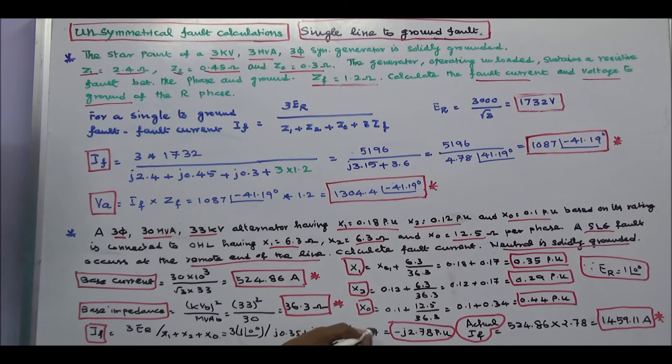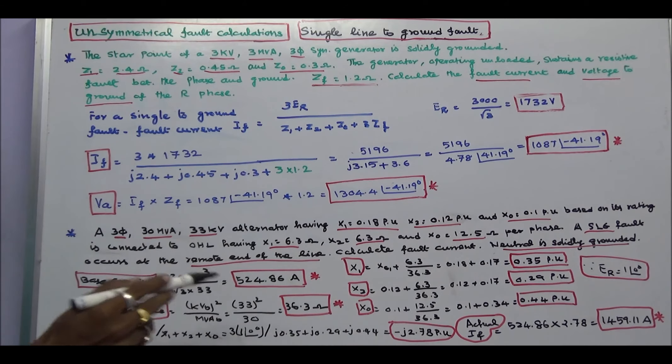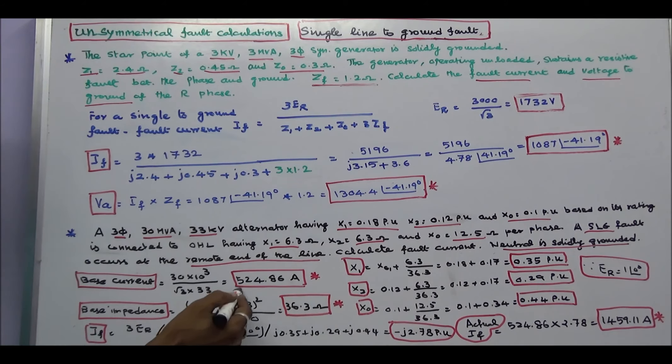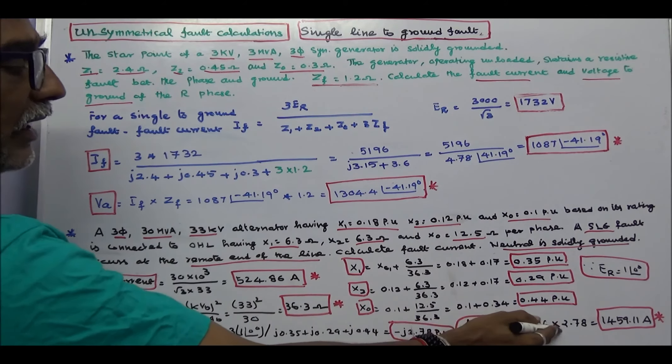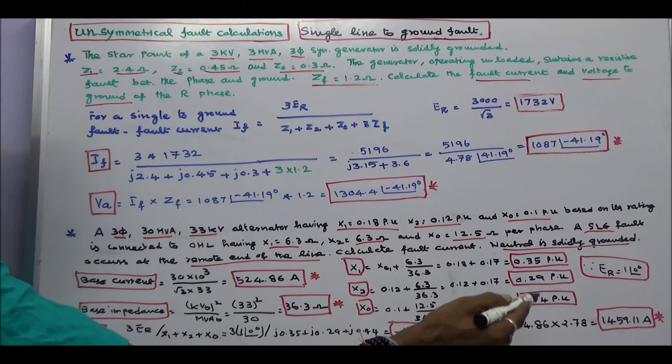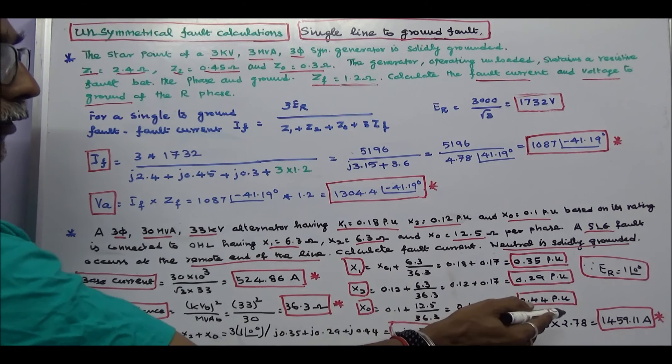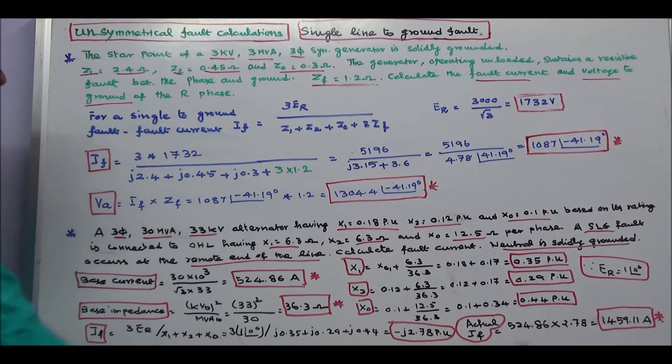Fault current is minus J2.78 per unit. That is per unit fault current. Actual fault current IF is equal to base current 524.86 into 2.78. That is equal to 1459.11 Amps. Here the actual fault current is 1459.11 Amps.